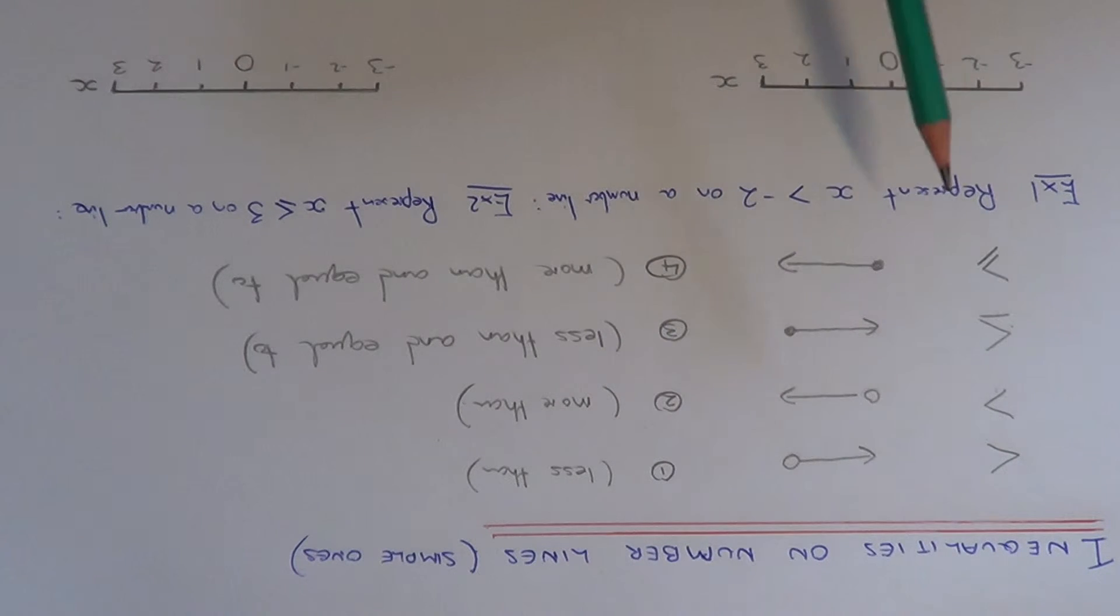So let's look at a couple of examples. Example one, we've got to represent x is more than minus two on a number line. So for more than we need to do an uncoloured circle at minus two.